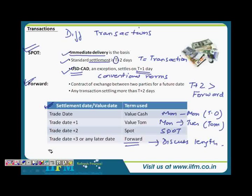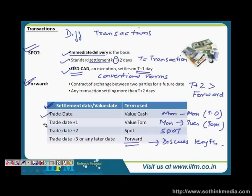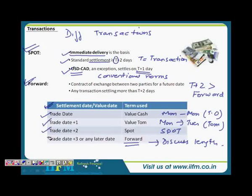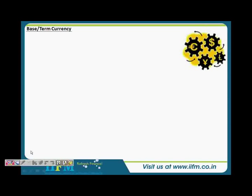So there are four types of transactions: (1) Cash — settlement on the same trade date; (2) TOM — settlement on trade date plus one; (3) Spot — settlement on trade date plus two; (4) Forward — settlement on trade date plus three or any later date.